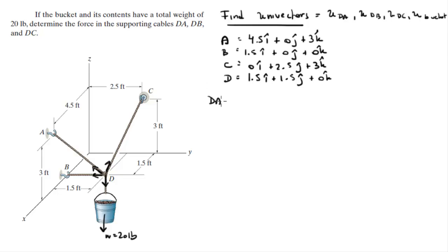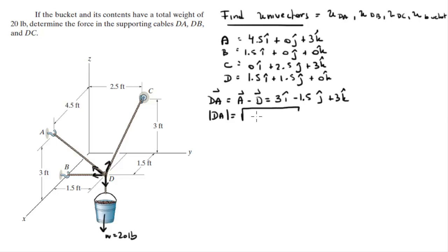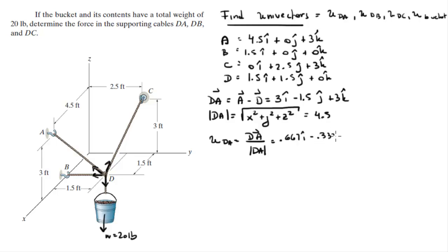Let's start with unit vector DA. To find it, you need to find the vector that goes from D to A first, which is found by subtracting D from A. This gives 3i minus 1.5j plus 3k. Then you find the magnitude of DA by squaring each component, adding them together, and taking the square root — and you get a magnitude of 4.5. Then the unit vector DA is found by dividing vector DA by its magnitude, which comes out to be 0.667i minus 0.333j plus 0.667k.